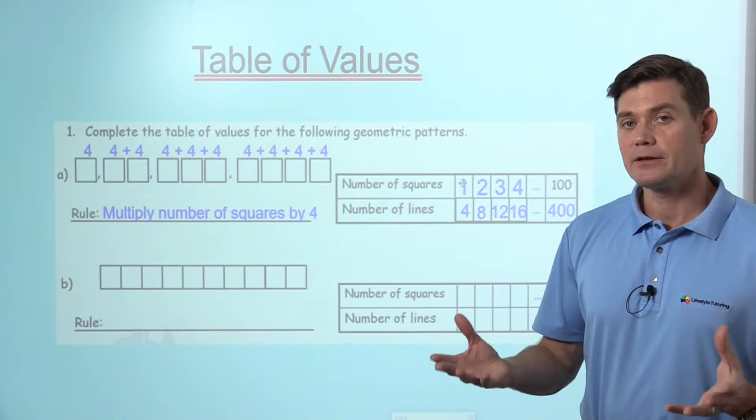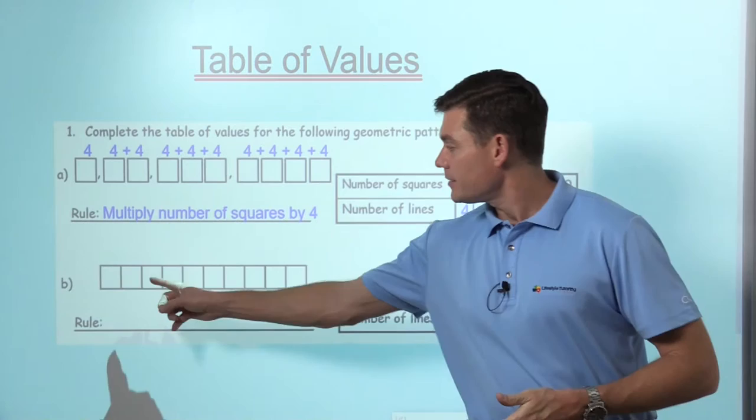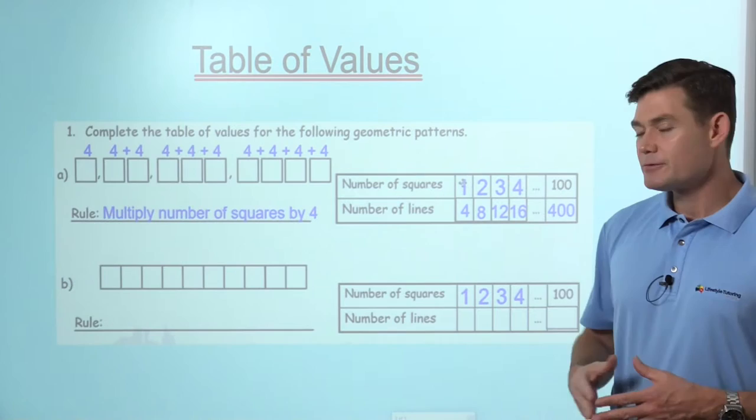Let's have a look at the one underneath. You can see we've got a series of squares again, except they're not separated. Again, we've got one, two, three and four squares. So there's one square, two squares, three squares, four squares.